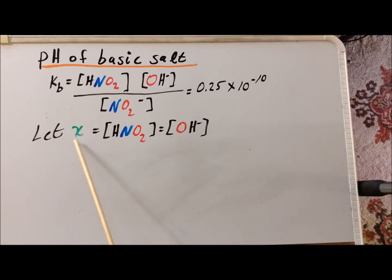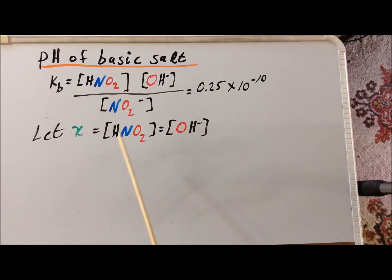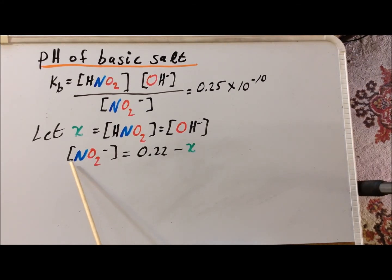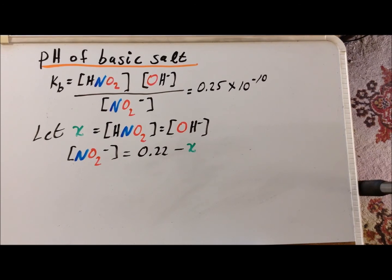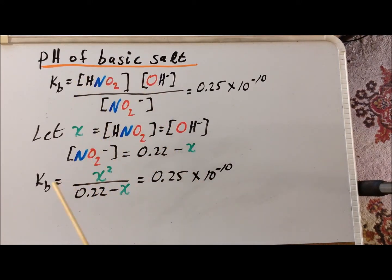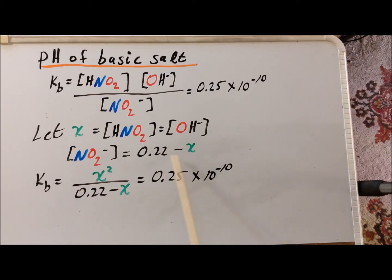We assign the variable X to the concentration of nitrous acid, which is identical to the concentration of hydroxide, because in the reaction of nitrite ion we get one nitrous acid and one hydroxide ion. At equilibrium, the concentration of nitrite ion is equal to its original value, 0.22 molar, minus the amount that shifted to the right. Substituting X, the Kb equals X squared over 0.22 minus X, equal to 0.25 times 10 to the minus 10.